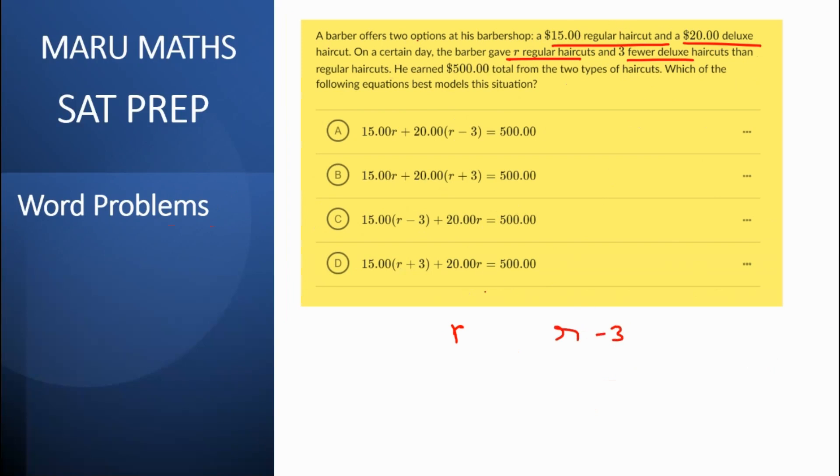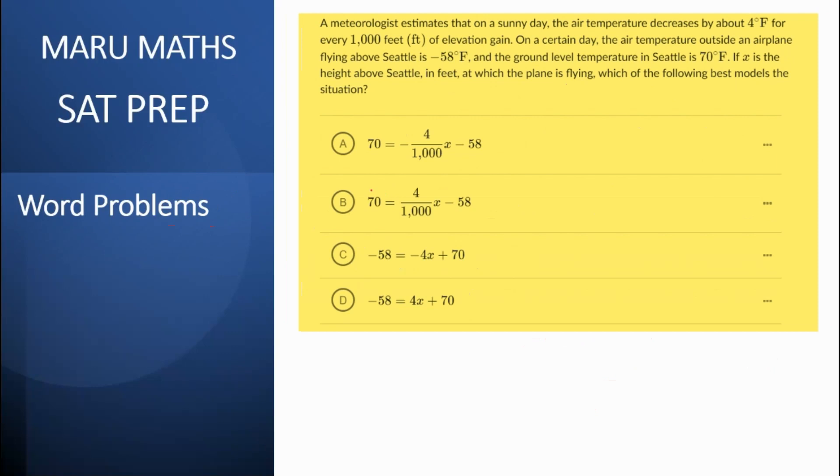And the price of each of these is R is $15 and $20 is the deluxe. So our equation should be 15R plus 20 times R minus 3. And then the total amount that he is making is equal to 500. So then clearly first option is the right option and that would be your answer. Let's look at the next question now.